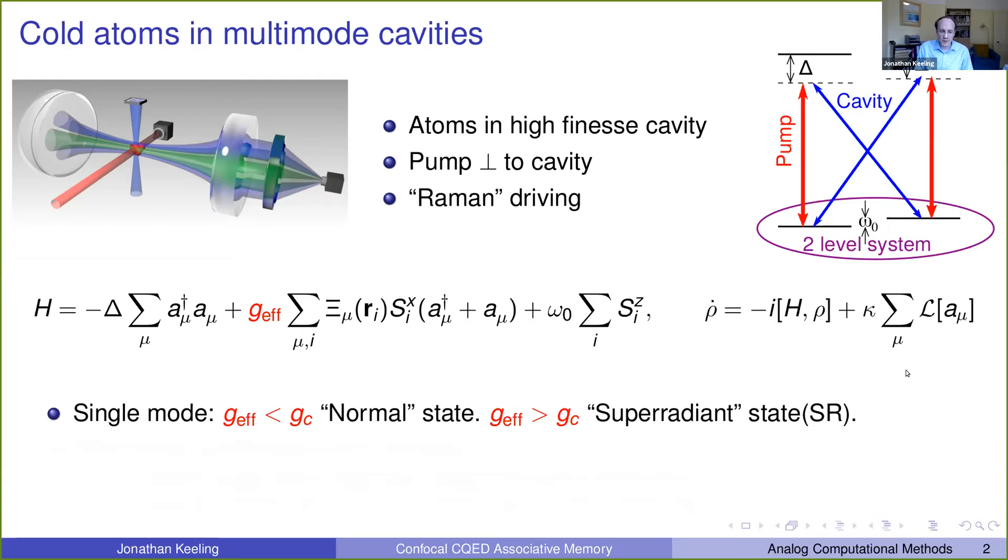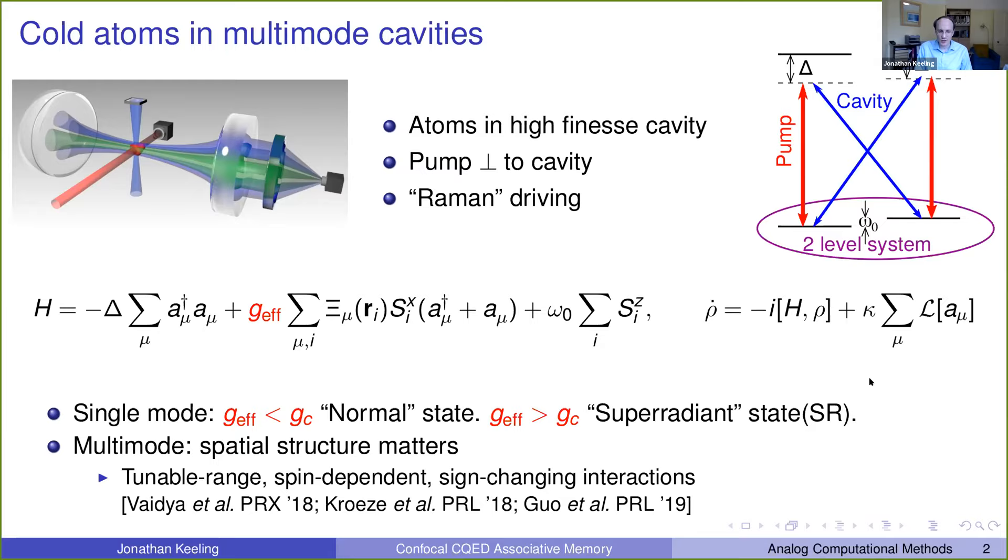What we already know for the single mode case very well is there is this kind of transition that when the effective coupling is weak, you have a normal state, while when it becomes strong enough, you get a transition to a super radiant state where the spins align along plus x or along minus x. And what we really want to study is the effects of the spatial structure from a multimode cavity. And as Ben explained in some detail, we know how to realize tunable range interactions, sign changing interactions, and even to make them spin dependent. And all of these things have been shown with this multimode cavity from Benjamin's lab.